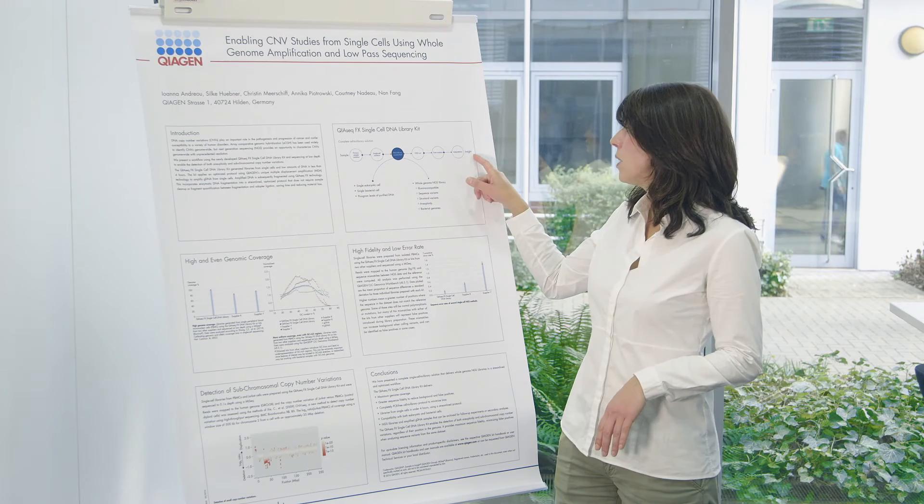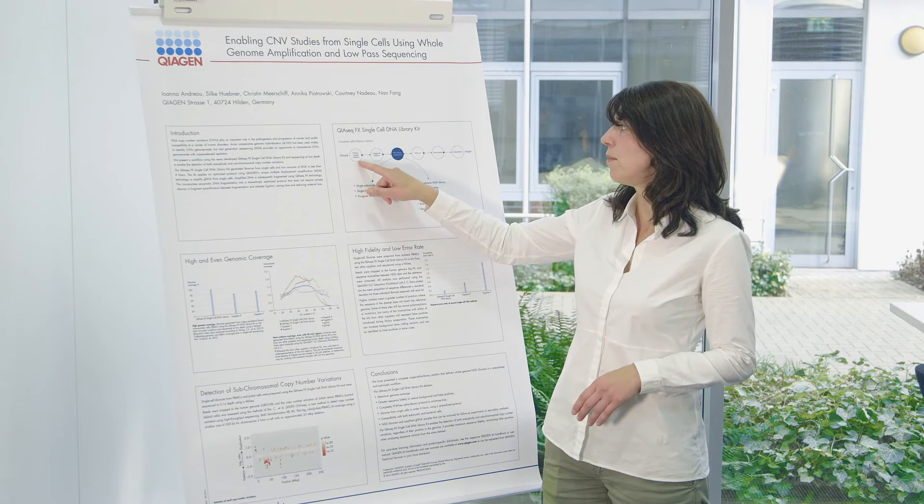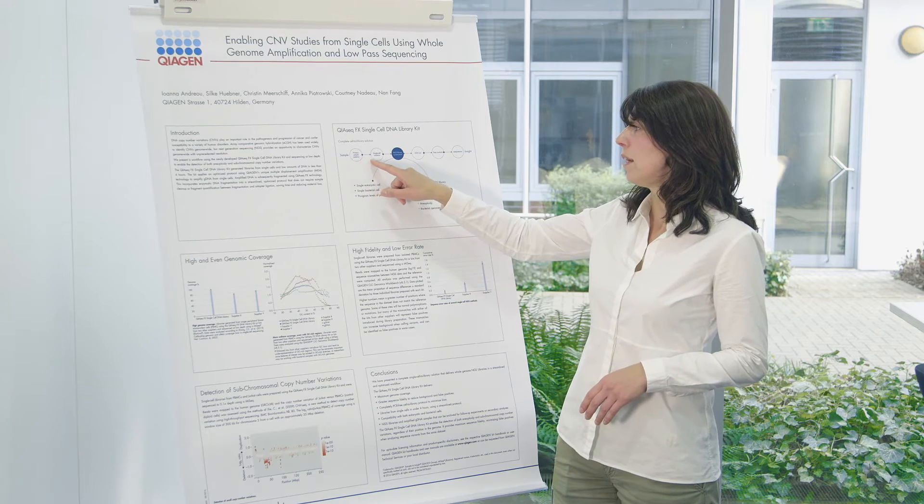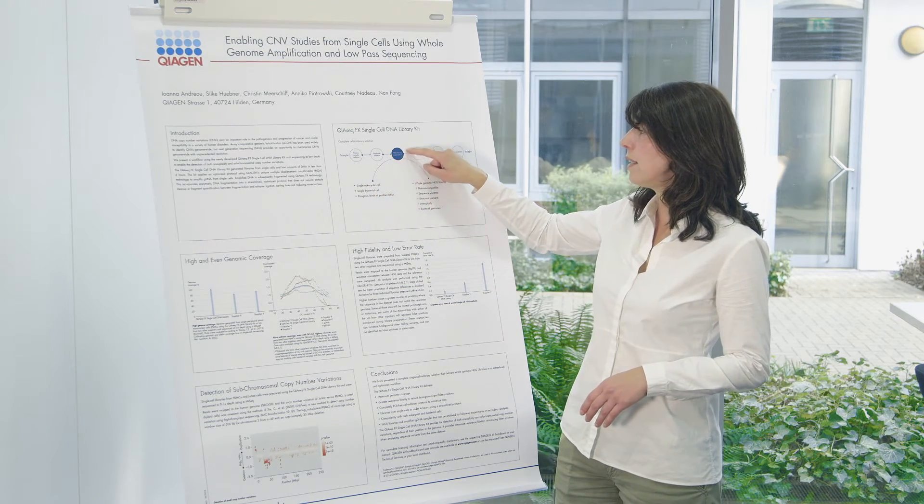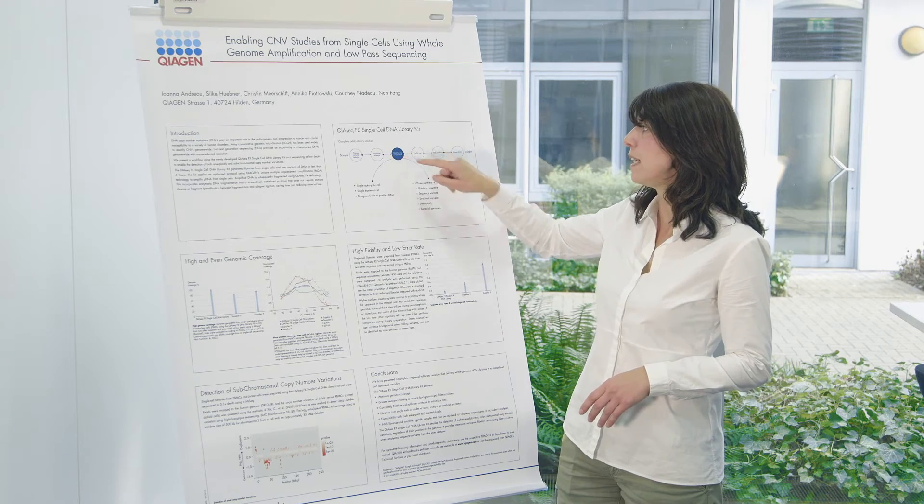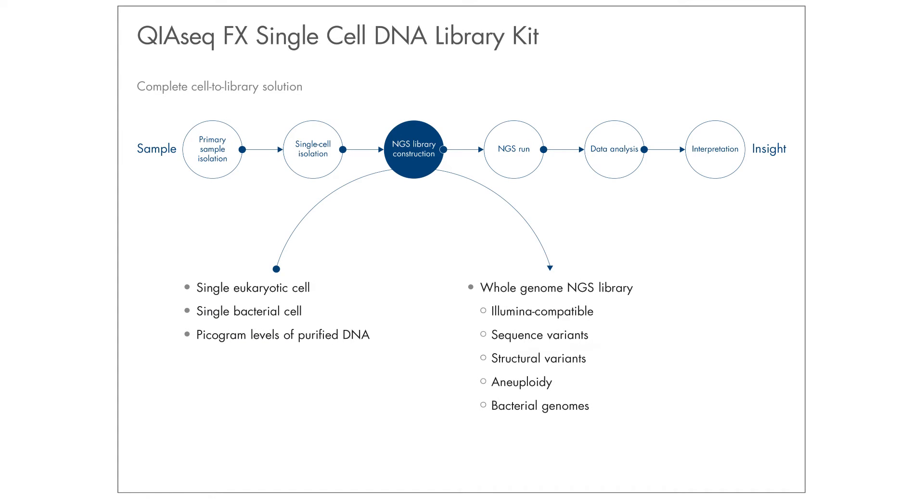Looking now at the sample to insight workflow while working with single cells, we are starting with primary sample isolation going to single cell isolation. With the QIAGEN FX single cell DNA library kit we have a complete single cell to library solution. You can start the amplification and library out of single eukaryotic cells or bacterial cells or from a few picograms of purified DNA.